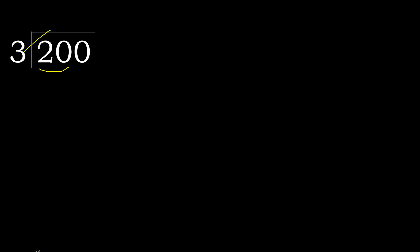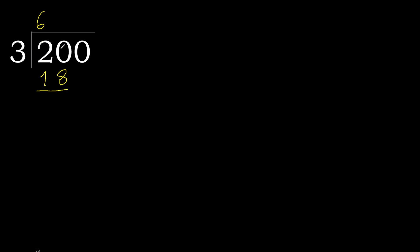3 multiplied by which number is nearest to 20 but not greater? 3 multiplied by 7 is 21 — 21 is greater. 3 multiplied by 6 is 18 — 18 is not greater. 20 minus 18 is 2. Next.